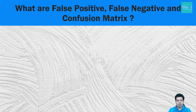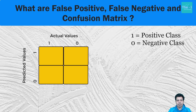Now let me explain this concept from a machine learning perspective. Let's say we have two classes of data. If the target variable has value 1, it is depicted as positive class, and if the value is 0, it is depicted as negative class. So when a data point is predicted as negative class or class 0 and it is actually negative class or class 0, this is called true negative.